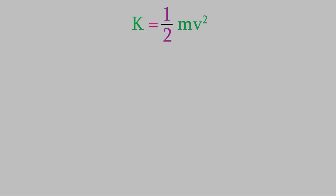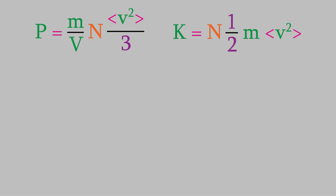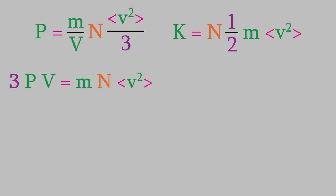K equals one-half times the mass times the velocity squared. Now, that's really just the kinetic energy for one particle. If we have millions of particles, we have to use the average of the squared velocity and multiply by n, the number of particles. Looking at our two equations — one for pressure and one for kinetic energy — you might notice they both have n times m times the average of v squared on the right side.